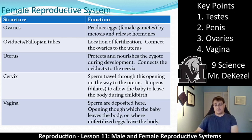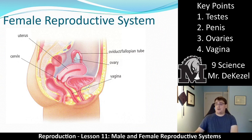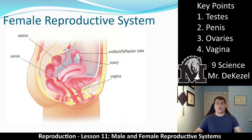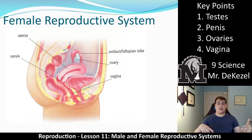We also have the vagina in females. Sperm are deposited here and it is also the opening through which the baby leaves the body, or through which unfertilized eggs leave the body through menstruation. The cervix is the opening to the uterus, and the vagina is the place where sperm are deposited by the penis. So the vagina is where sperm is deposited, it then travels through the cervix, the uterus, to the fallopian tube where it meets the egg, which has come from the ovary.